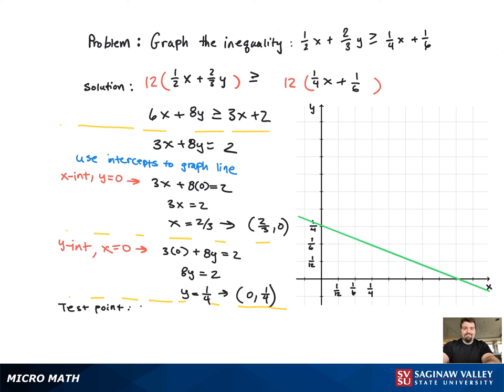Now we need a test point to see which region we want to shade. So we're going to use the test point 0, 0. So when we plug that into the inequality, we get 0 greater than or equal to 2, which is false.